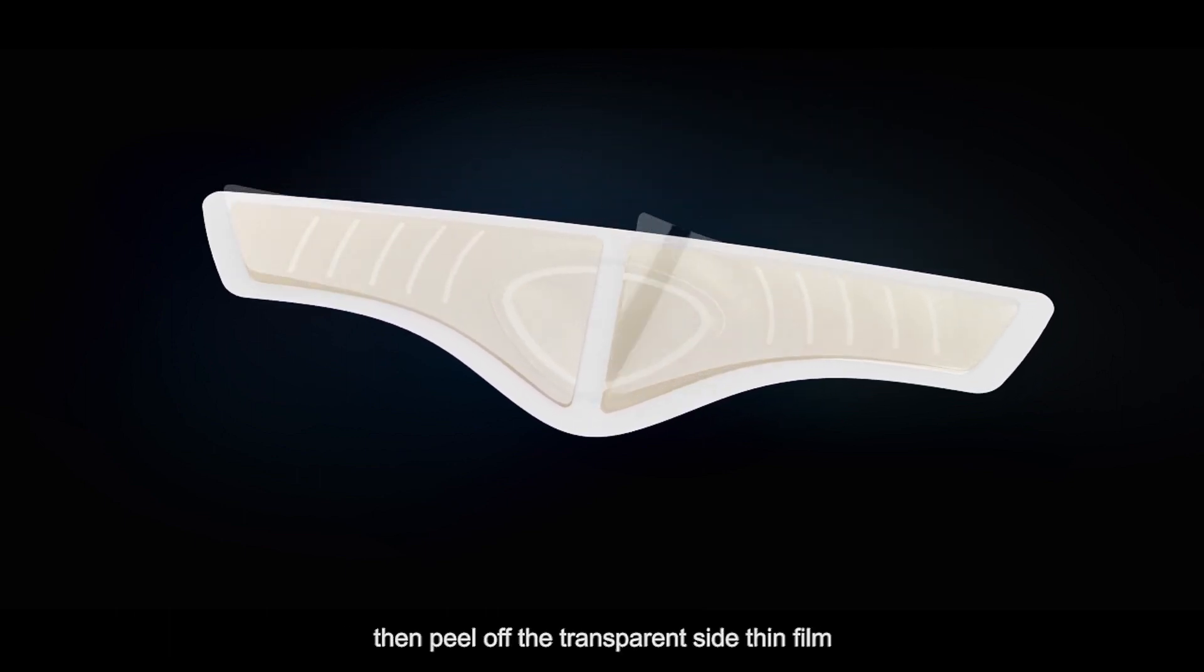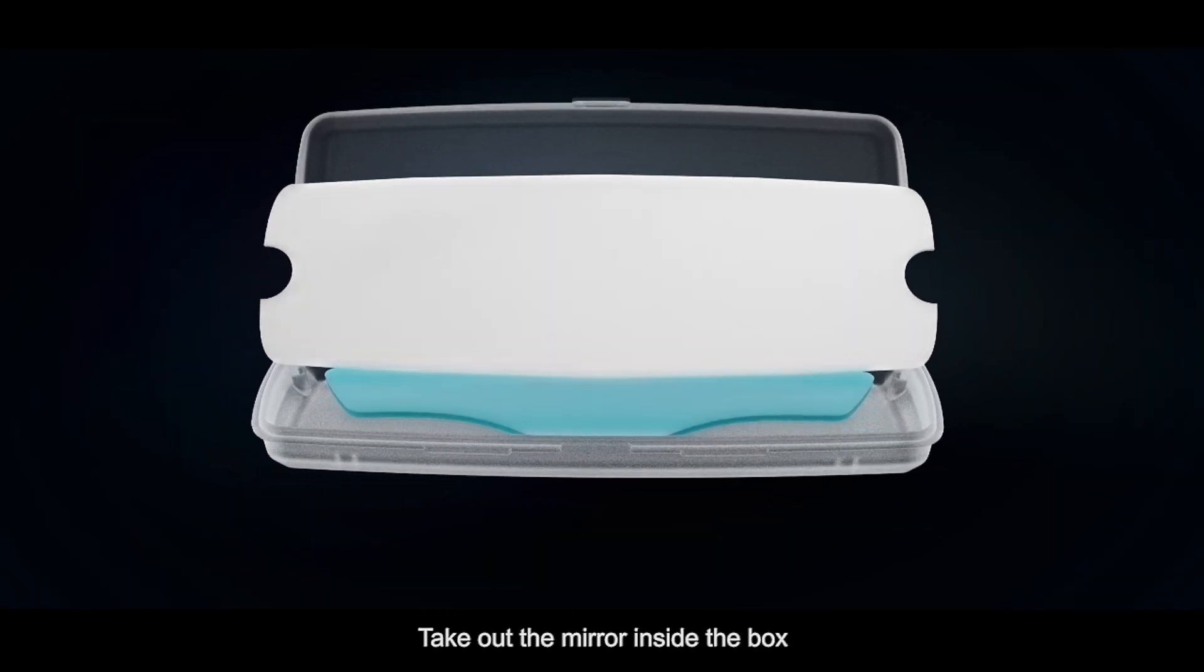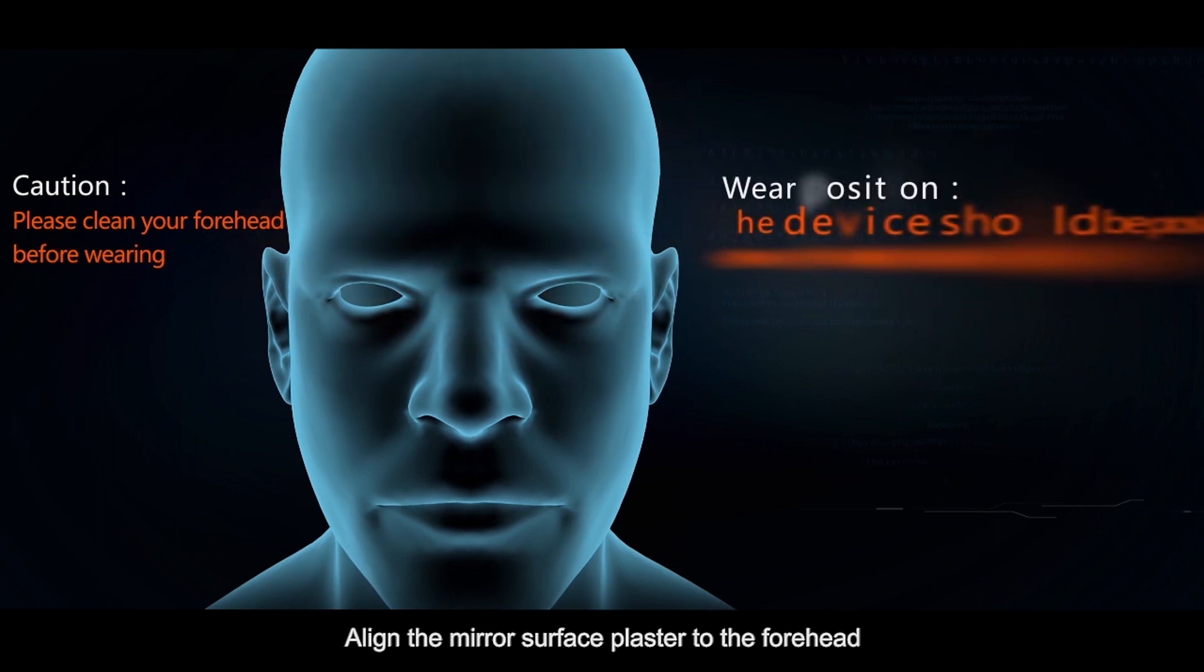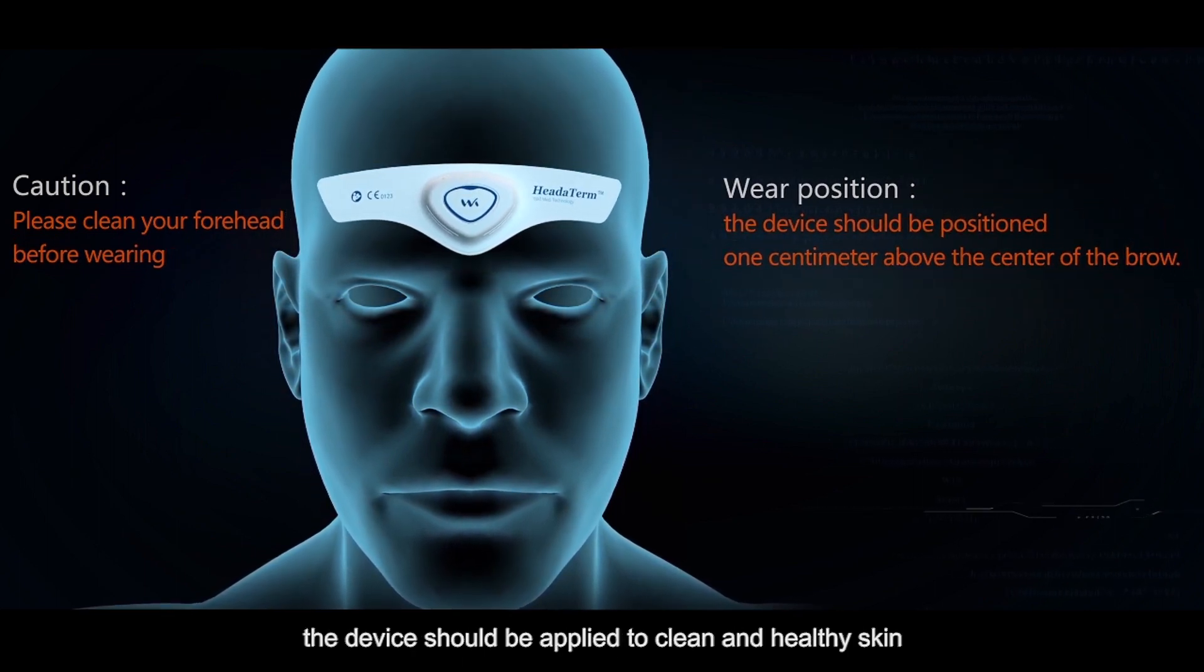Peel off the transparent side thin film. Take out the mirror inside the box. Align the mirror surface plaster to the forehead. The device should be applied to clean and healthy skin.